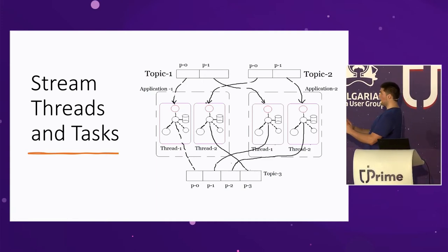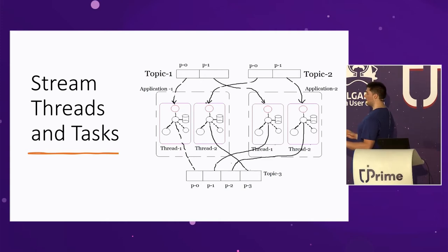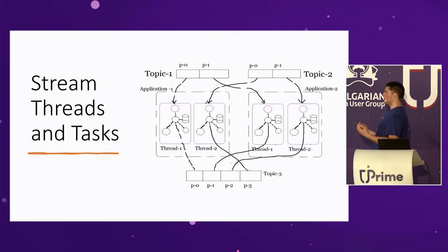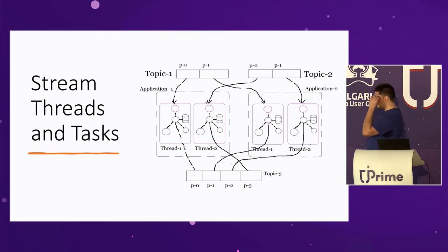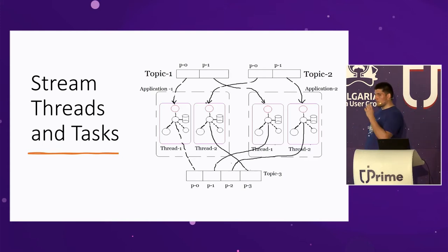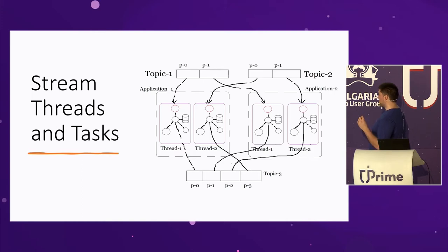One more thing: one thread can have multiple tasks. Those tasks have the same topology replicated, polling from different partitions and writing to some output topics, each with their own private state store. So you can think of the state store as bound to the input partition — same as the task. Sharing a state store between threads is not a good idea.